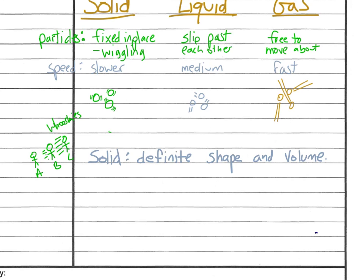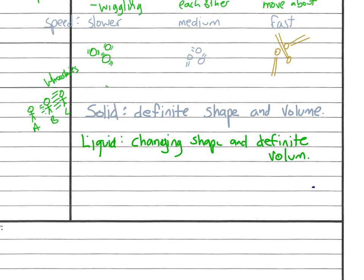Now, a liquid has a changing shape and a definite volume. A liquid, it always takes up the same amount of space, but depending on what container you put it in, it might have a different shape. So, that's one of the ways that we can tell the difference between a liquid and a solid.